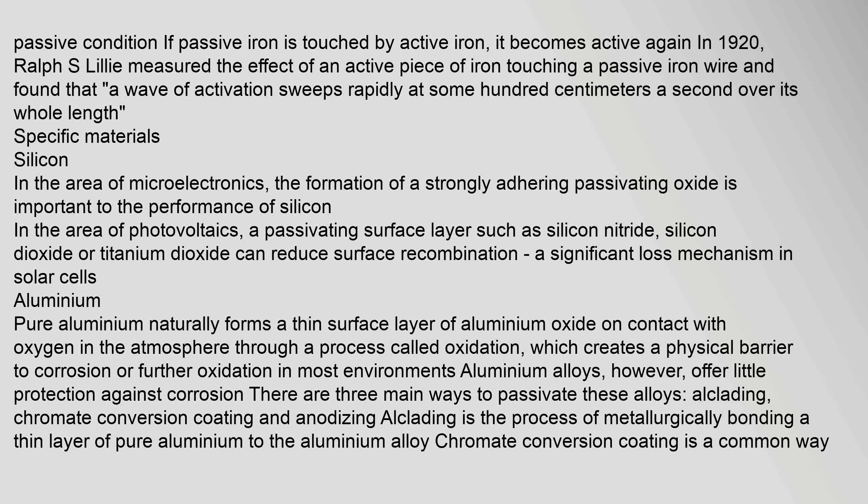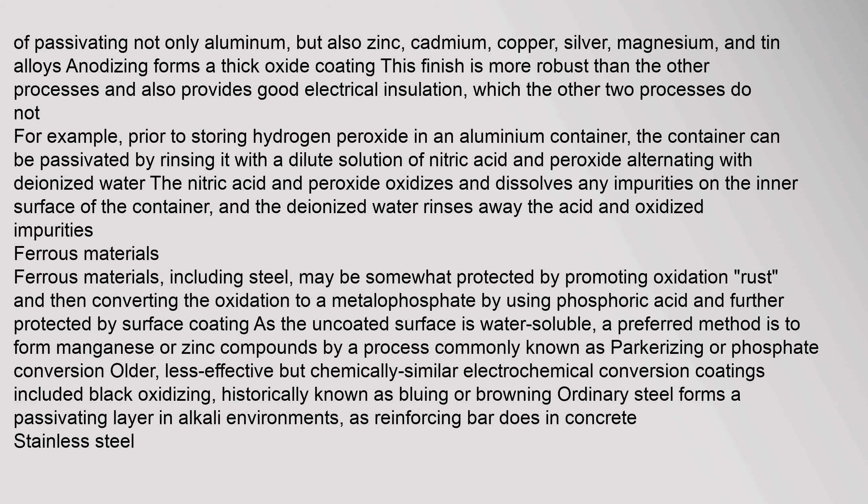Alclading is the process of metallurgically bonding a thin layer of pure aluminium to the aluminium alloy. Chromate conversion coating is a common way of passivating not only aluminium, but also zinc, cadmium, copper, silver, magnesium, and tin alloys. Anodizing forms a thick oxide coating; this finish is more robust than the other processes and also provides good electrical insulation, which the other two processes do not. For example, prior to storing hydrogen peroxide in an aluminium container, the container can be passivated by rinsing it with a dilute solution of nitric acid and peroxide alternating with deionized water. The nitric acid and peroxide oxidizes and dissolves any impurities on the inner surface of the container, and the deionized water rinses away the acid and oxidized impurities.